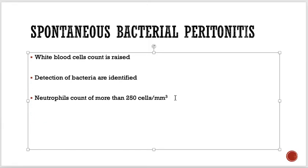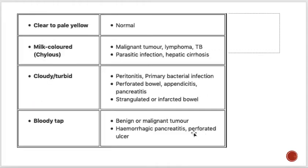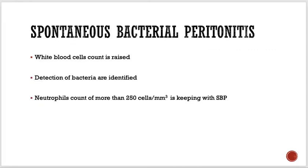A neutrophil count of more than 250 cells per cubic millimeter is keeping with spontaneous bacterial peritonitis. Another cause of peritonitis is a perforated bowel — any type of GI perforation, perforated ulcer, or perforated bowel. When the GI tract is perforated, culture will show multiple organisms, especially gram-negatives. That is why these investigations are important.